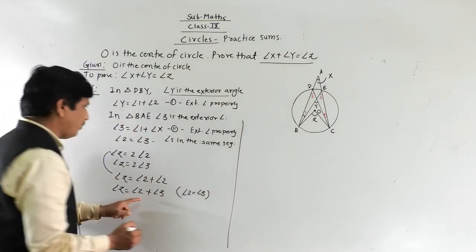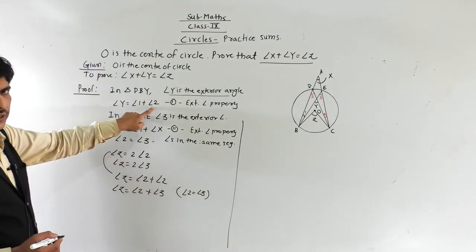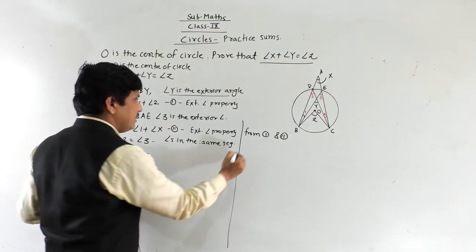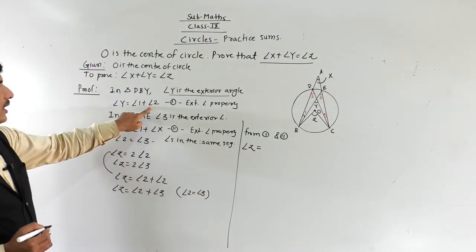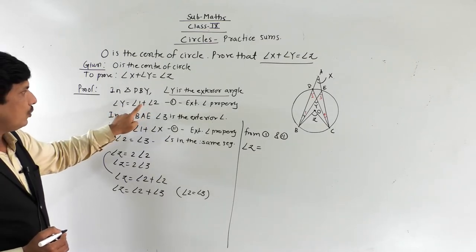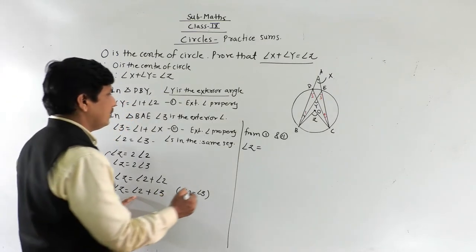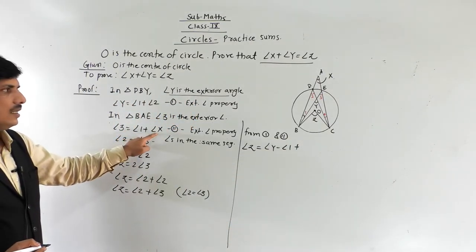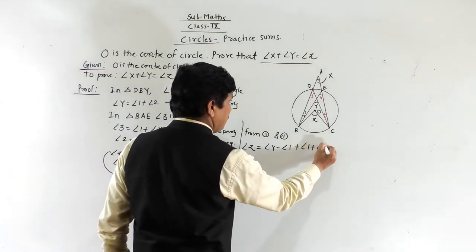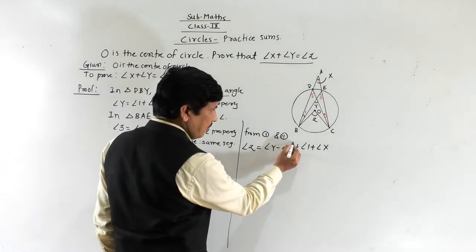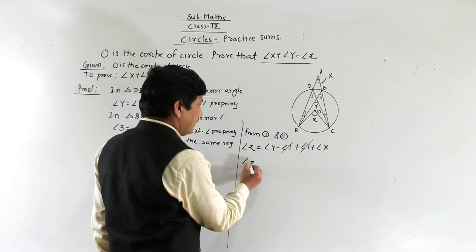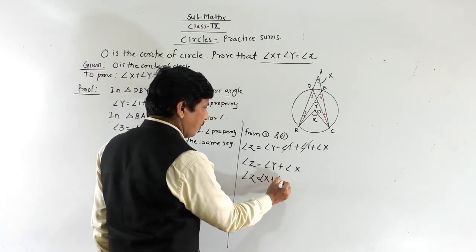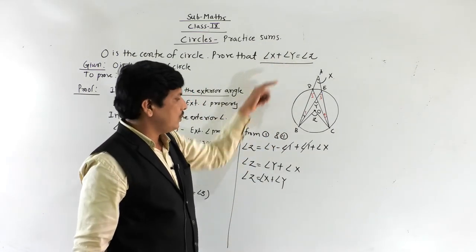Substituting: angle Z equals angle Y minus angle 1 plus angle 1 plus angle X. The angle 1 and minus angle 1 cancel out, leaving angle Z equal to angle Y plus angle X, which can be written as angle Z equals angle X plus angle Y. This is what was required to prove.